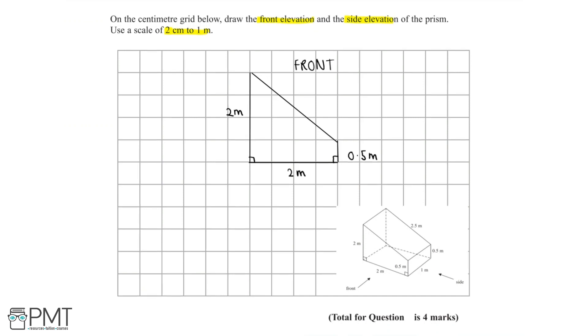Now let's move on to the side elevation. We have a rectangle and a slightly larger rectangle directly behind. The rectangle has a width of 1m, which using the scale we can draw as a 2cm line on our grid.